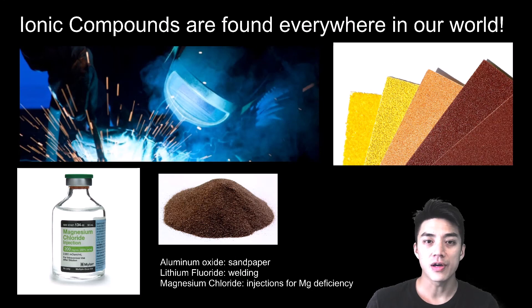Ionic compounds are found everywhere in our world and they have significant uses in modern society. For example, aluminum oxide is found in sandpaper, lithium fluoride is used in welding, and magnesium chloride is used as a part of injections to treat magnesium deficiencies.